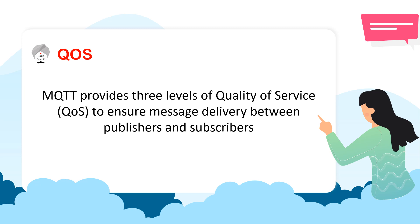The full abbreviation of QoS is Quality of Service. This is to ensure the message is delivered between publisher and subscriber — it defines how reliably a message has been sent from the publisher to the subscriber. There are three levels: QoS 0, 1, and 2.